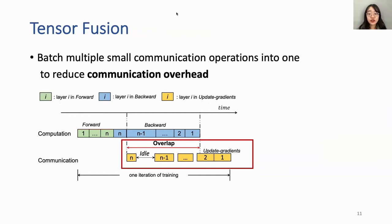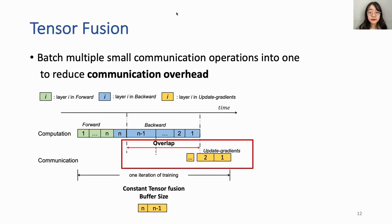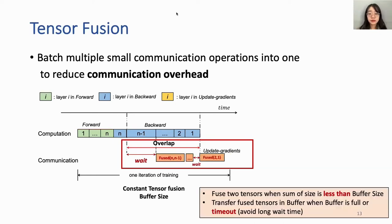Moreover, during DDL training, the communication scheduler may batch multiple small communication operations into one to reduce overheads — this is called the tensor fusion strategy. A constant tensor fusion buffer size is set by the user before training. Gradients of layer n are placed in the buffer when their size is less than the buffer size; then layer n-1 is added similarly. If the buffer is full, the fused layers n and n-1 are transferred together. However, this strategy introduces wait time. In short, tensors are fused when their combined size is less than the buffer size, and transferred when the buffer is full or times out — a trick to avoid long wait times.